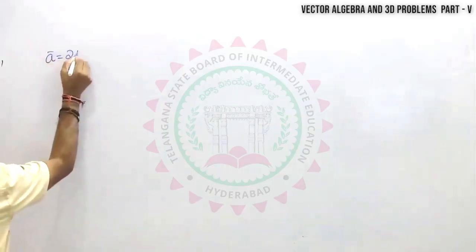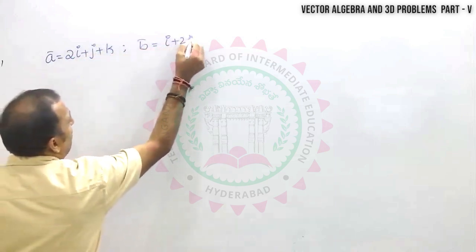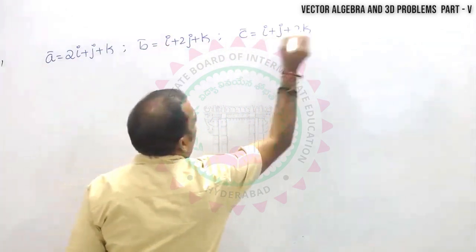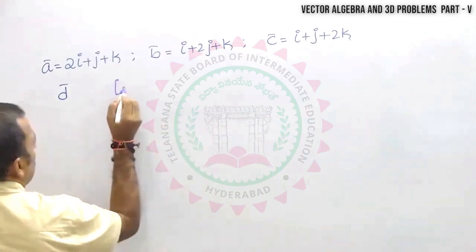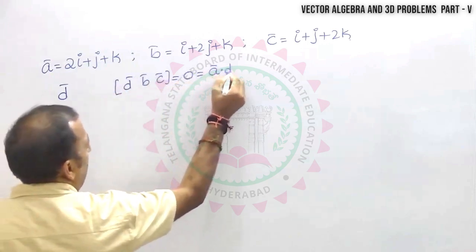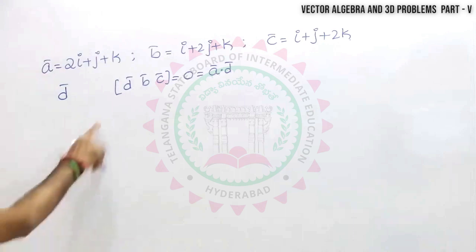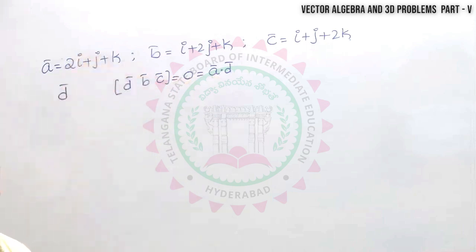Vector a̅ = 2i + j + k, b̅ = i + 2j + k, c̅ = i + j + 2k. d̅ is a unit vector such that the box product [d̅ b̅ c̅] = 0 and a·d = 0. Given these two conditions, how do we find d̅?